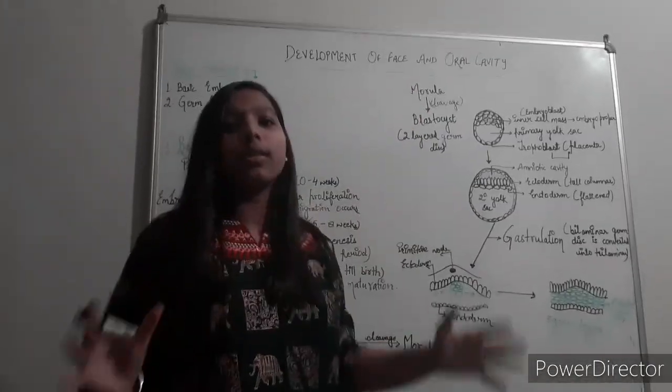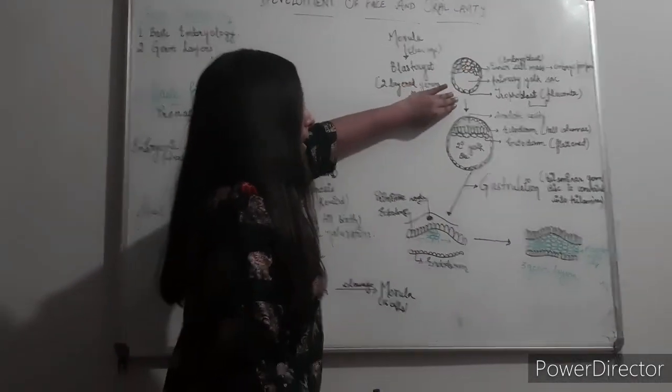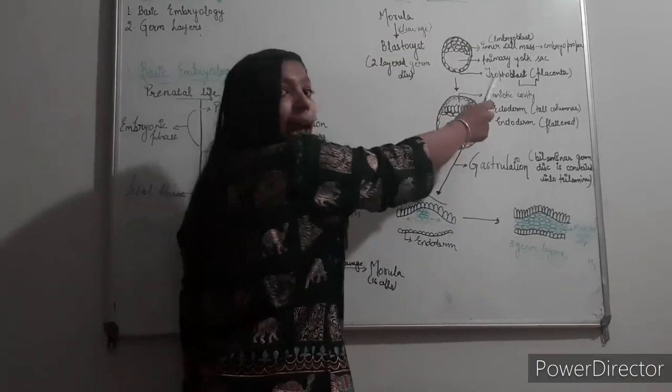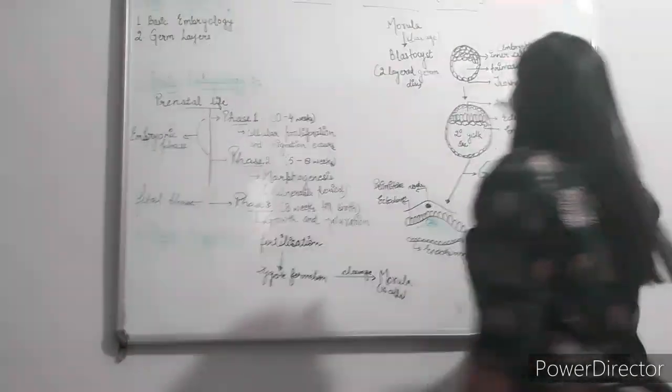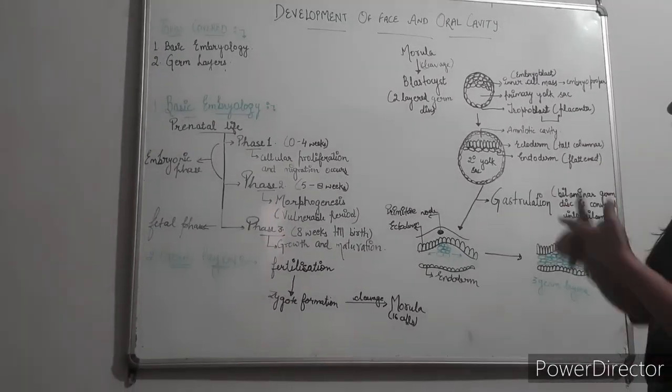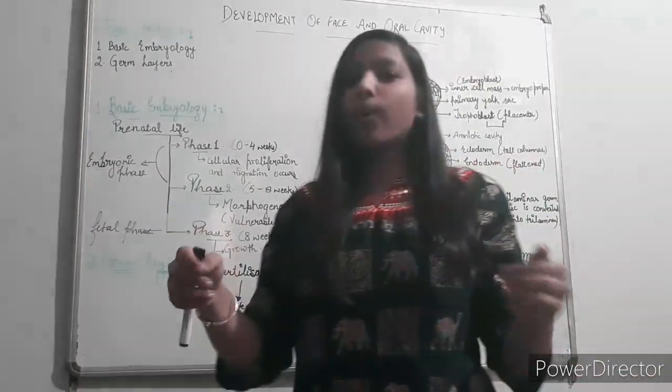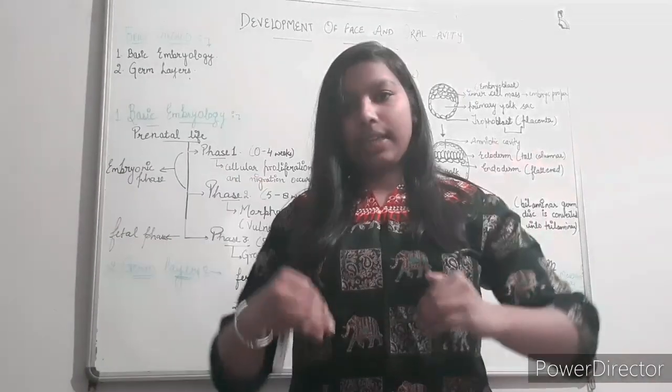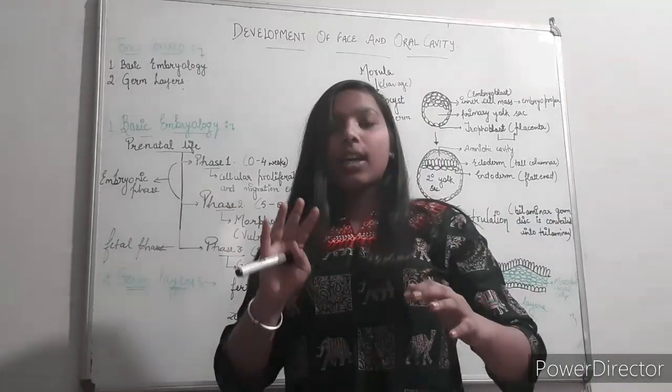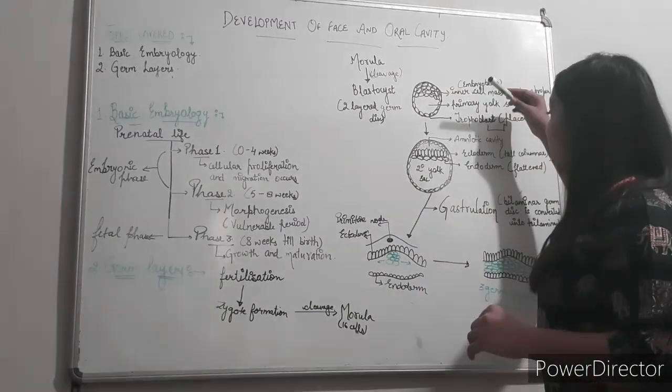After the morula stage, within some time this morula is converted into blastocyst. Blastocyst is a structure which consists of inner cell mass, trophoblast, and primary yolk sac. Inner cell mass is embryo proper or embryoblast, which is used for the formation of extra embryonic layers, and trophoblast forms placenta. Placenta is a supporting structure of the embryo.